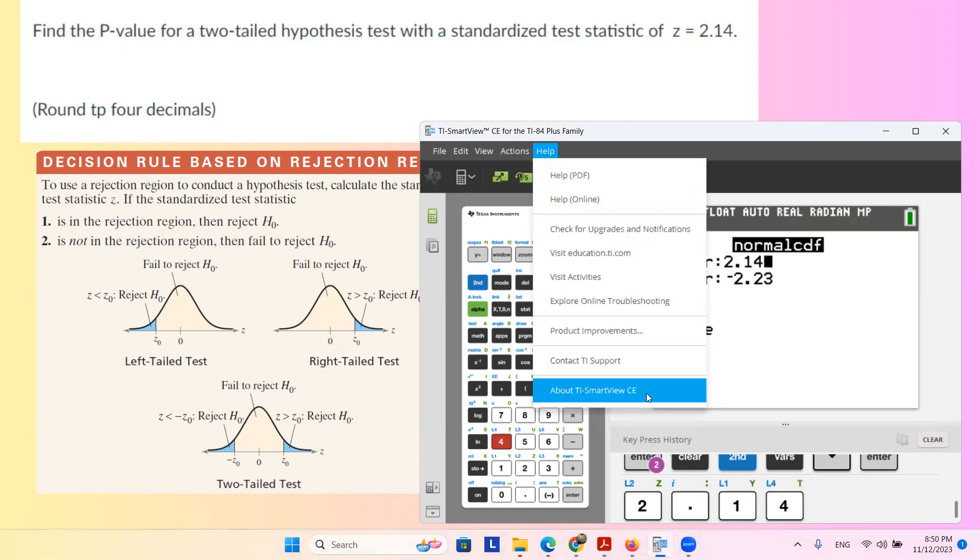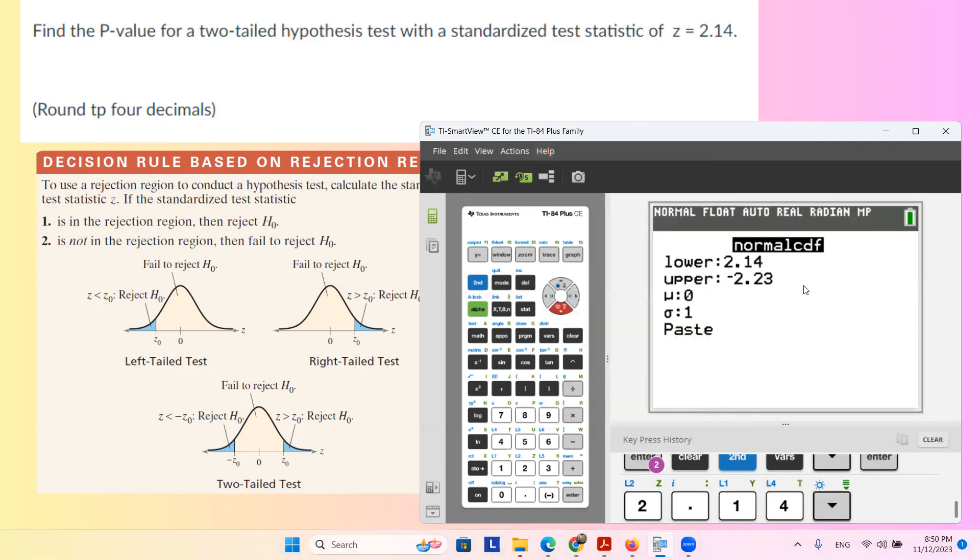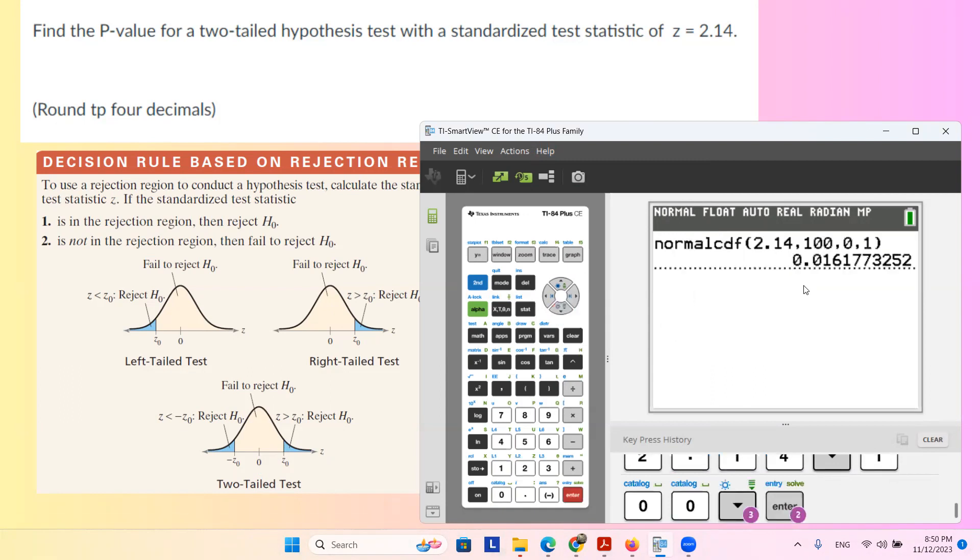On the right hand side we're going to have a very large positive number like 10 or 100. Mean is zero, standard deviation is one, and you're going to find this little area here.